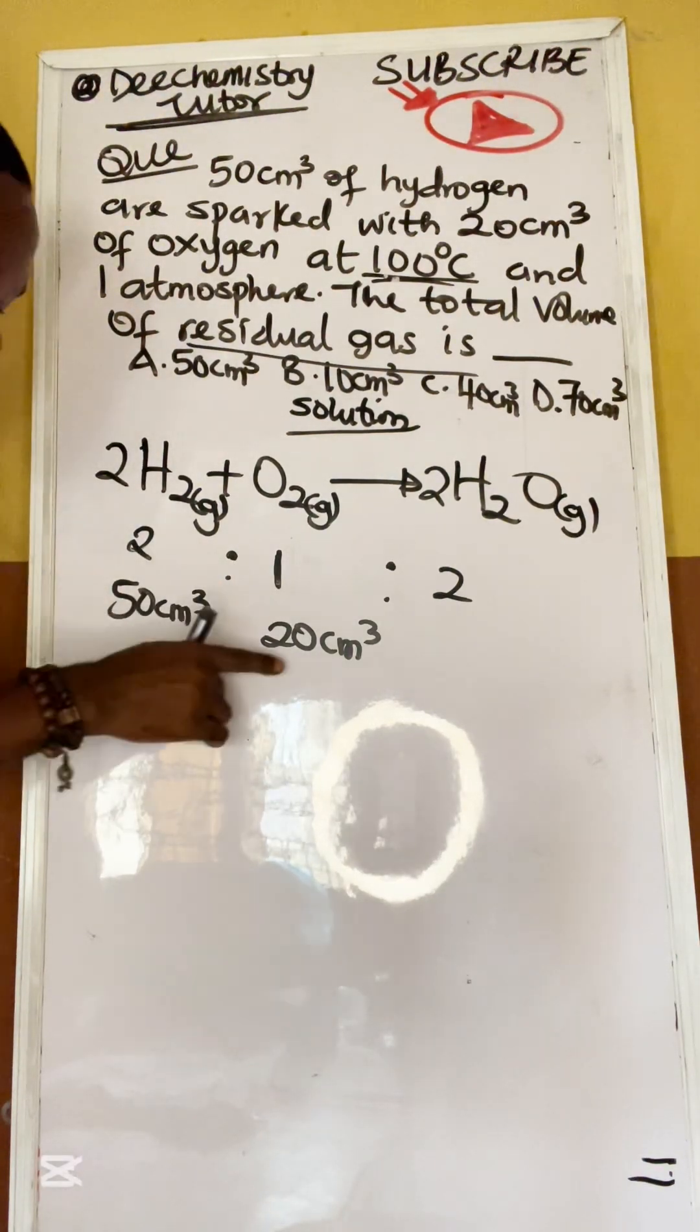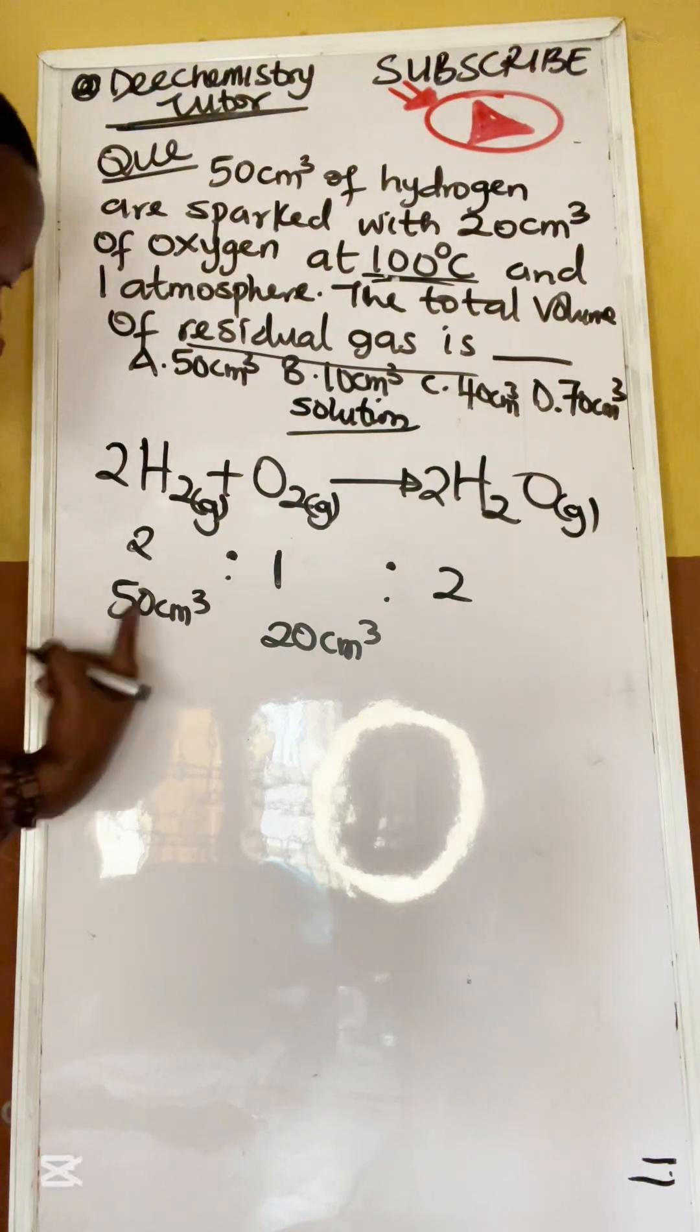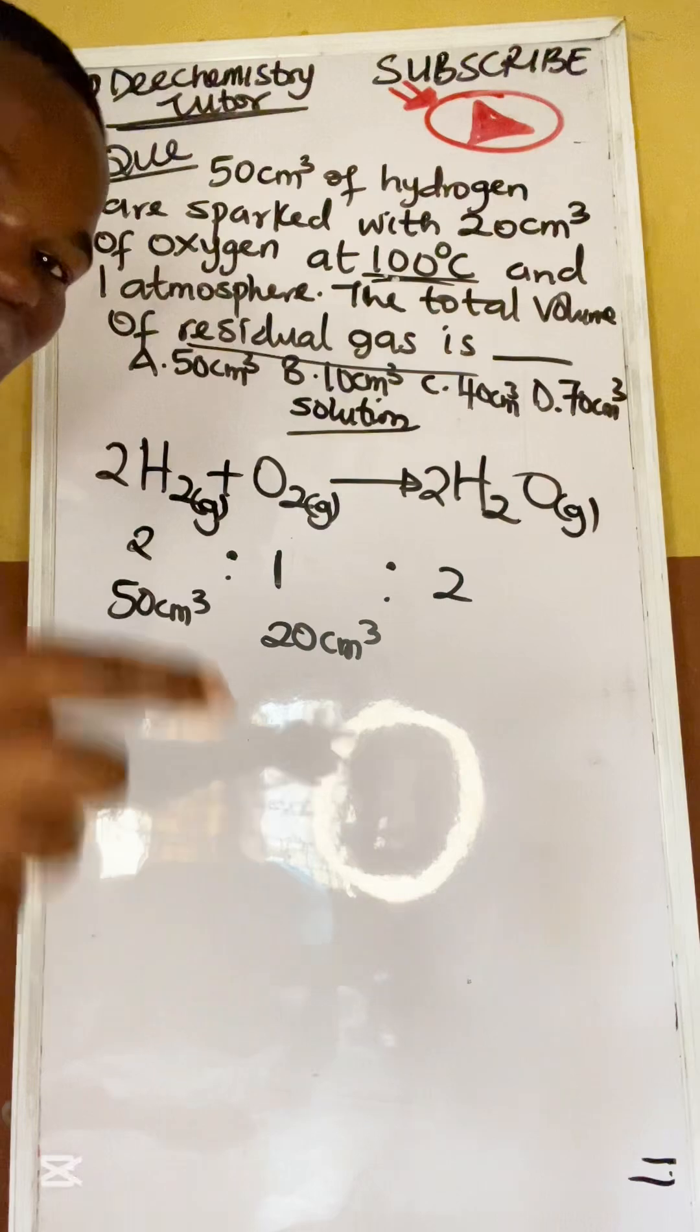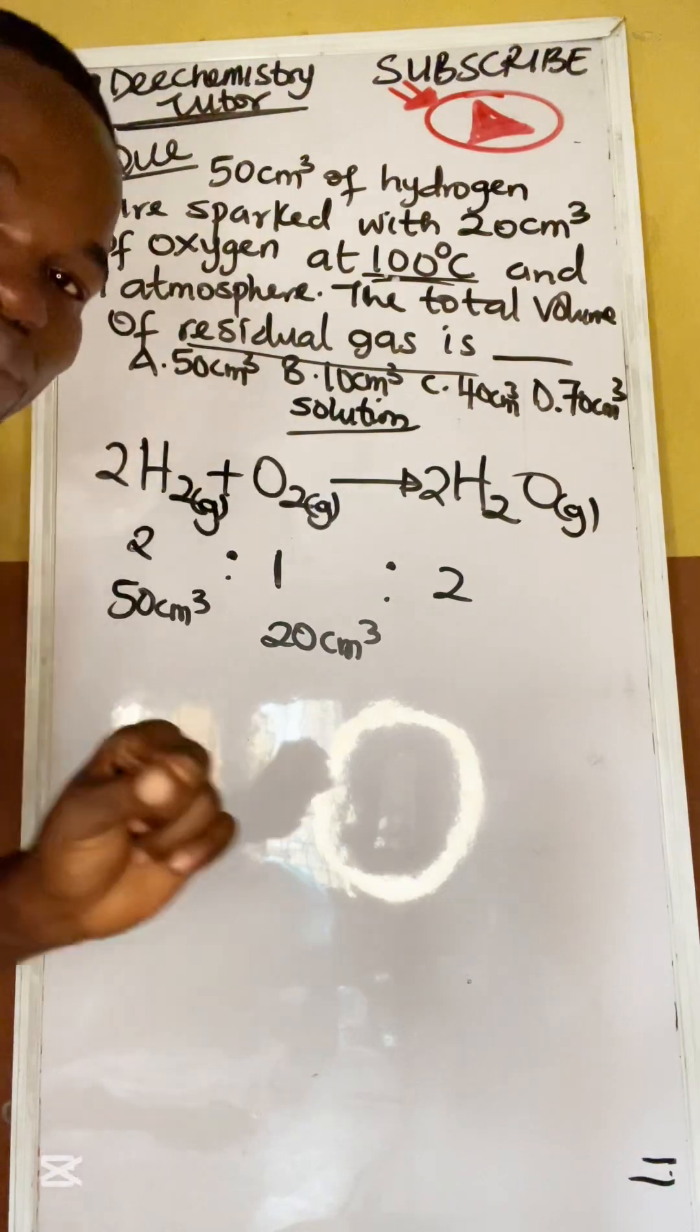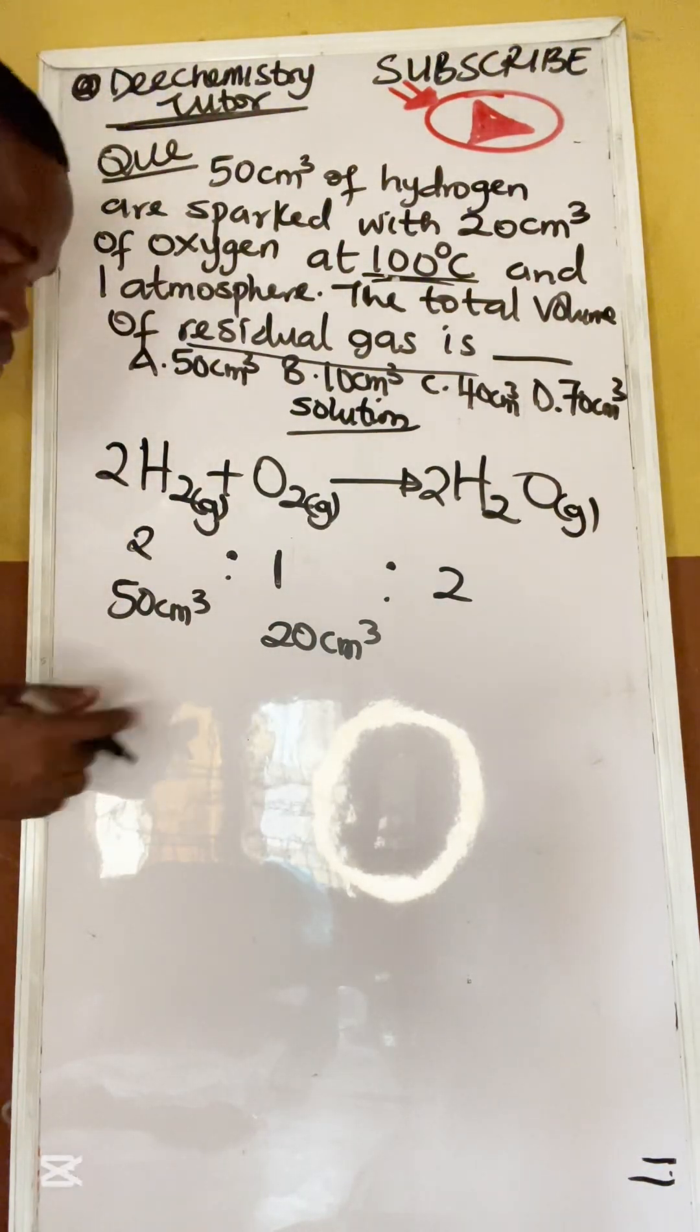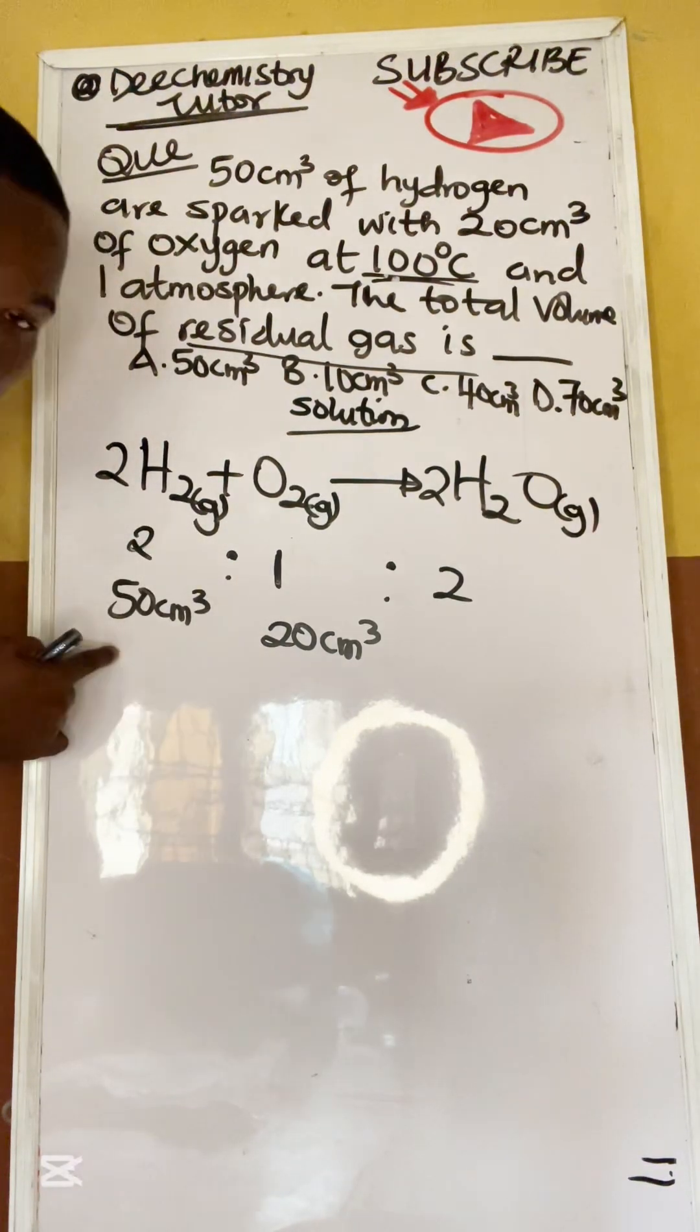If this is 50, this must be 25. Because if it is two to one, if this one is 50, this one must be 25. That is where the problem is. What was given? It is 20 cm³ that was given. So that's why you have to understand the concept of limiting reagent. But now, let me tell you something. If this one is 20 and this one is one, automatically this one can be 40.